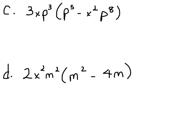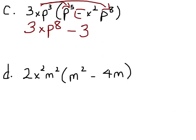Here we have two terms that we're going to distribute this over. And we're going to keep this negative sign or this minus sign with that second term. 3x p to the third and p to the fifth gives us p to the eighth minus 3x times x squared is x cubed. P to the third times p to the eighth is p to the eleventh.